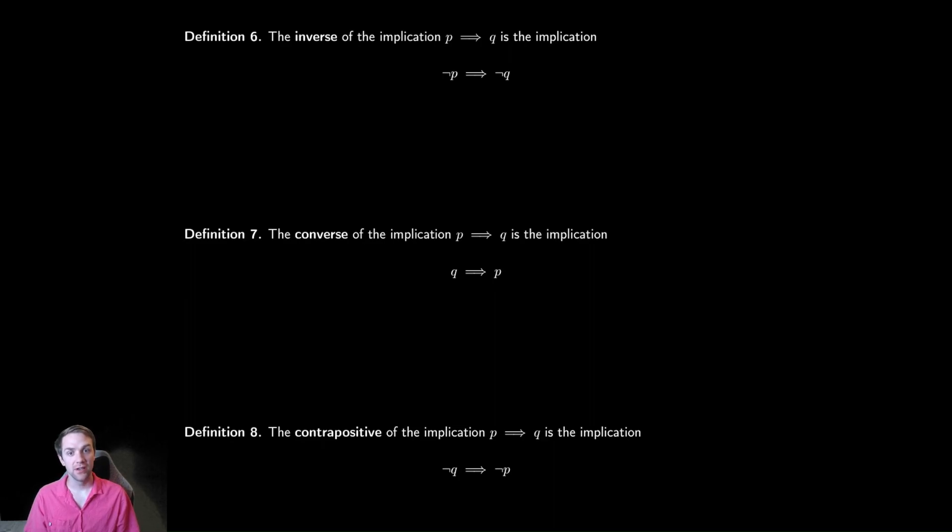Having done some discussion of the implication, the arrow symbol, we're going to talk about a couple of things that are related to that symbol. These are variations of given some theorem or statement. Our simple example we had earlier was if x is positive, then x cubed is positive or something like that. There's various ways you could modify that, and we might be curious if those are also true.